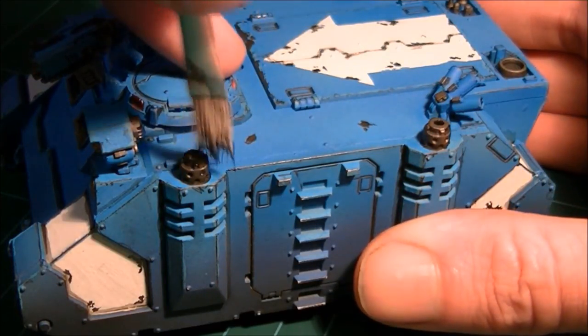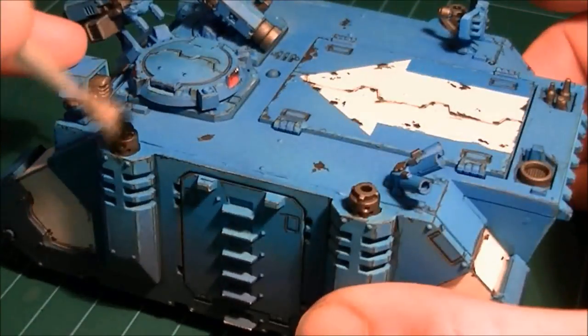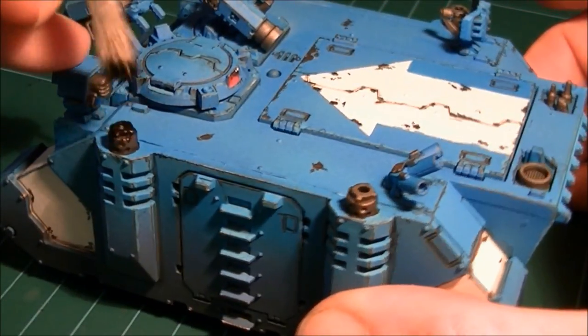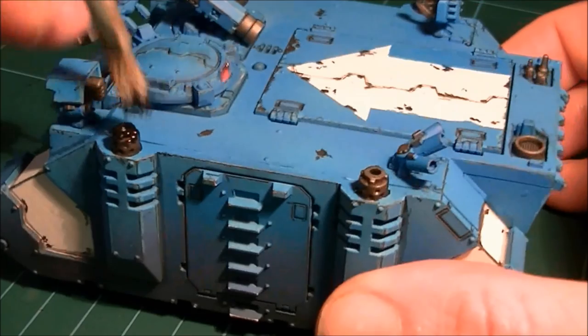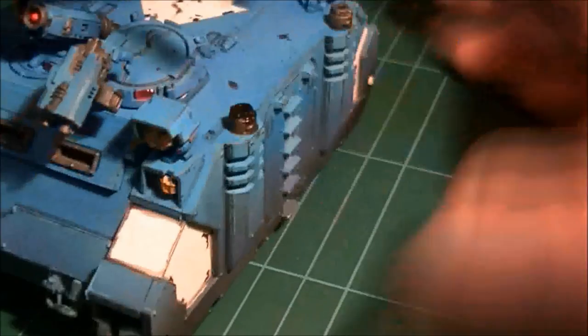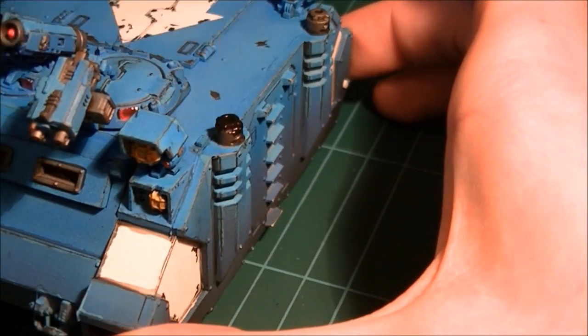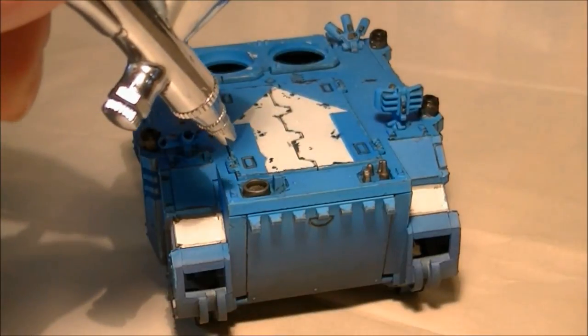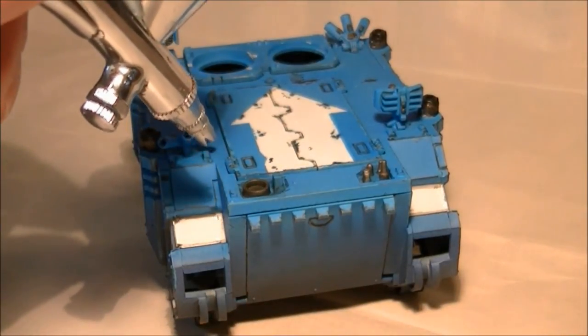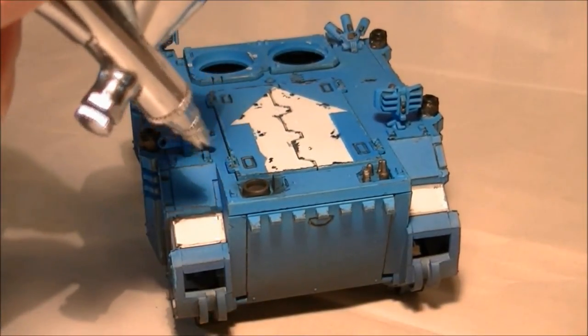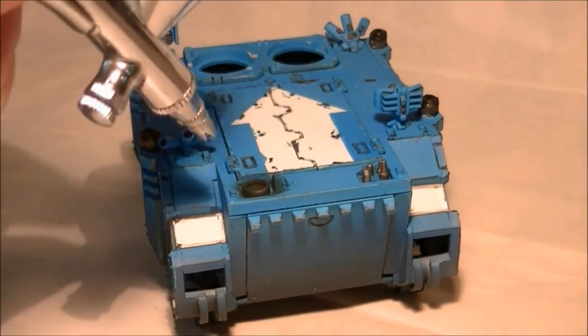Using chaos black you can use an old tiny brush and just basically do a really heavy dry brush over all the exhaust systems. Any of the vents are also going to get the chaos black treatment. I'm gonna use the airbrush for this just so it feathers it out at the edges.